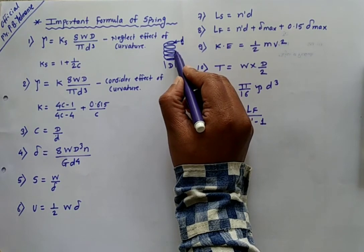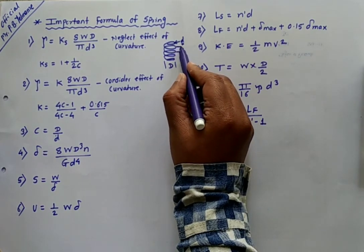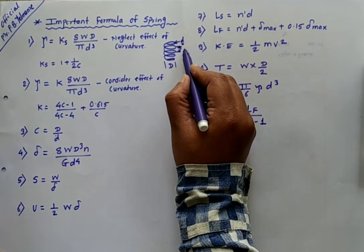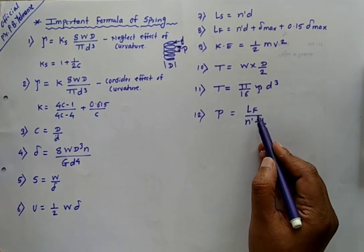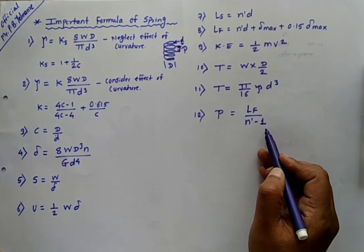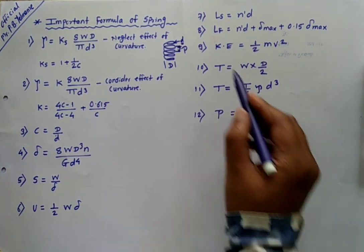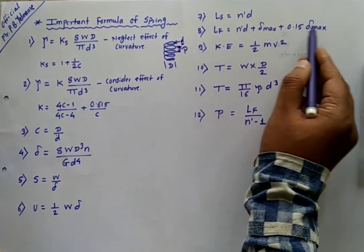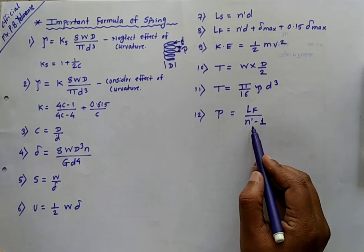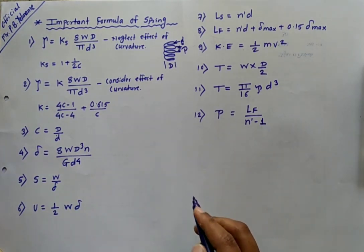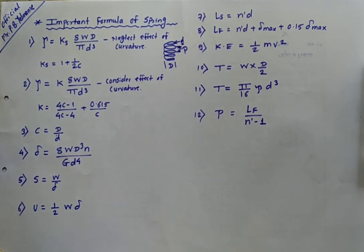The last important formula is pitch, which is the adjacent distance between two coils of the spring. It is calculated as: pitch = Lf / (n' − 1), where Lf is the free length and n' is the total number of turns. These are the important formulas of a spring used for solving problems. Thank you very much.